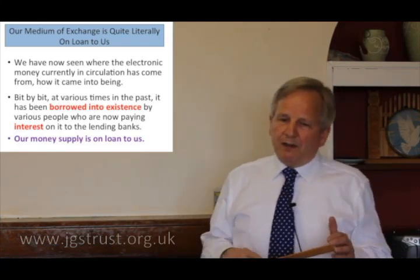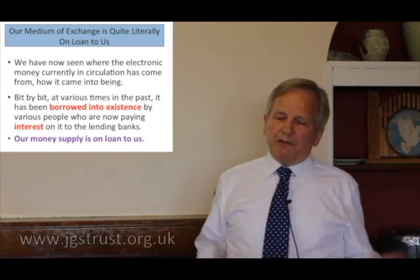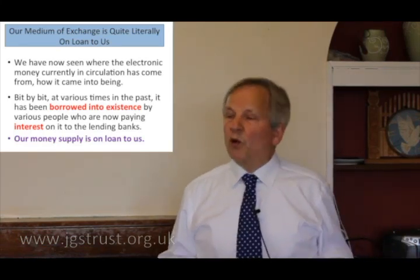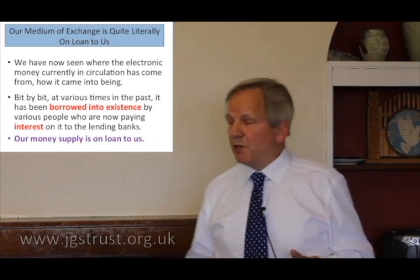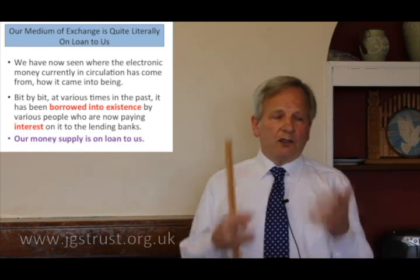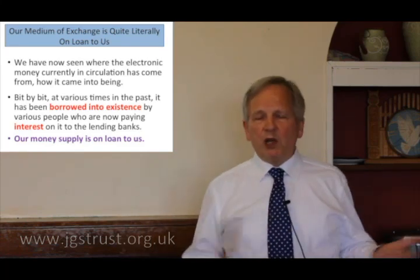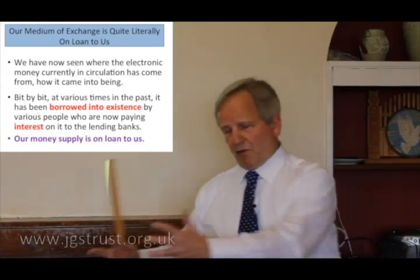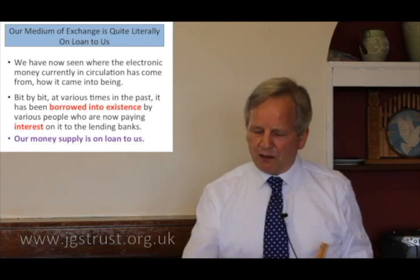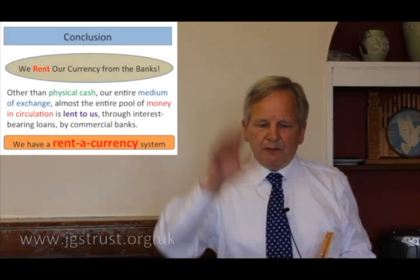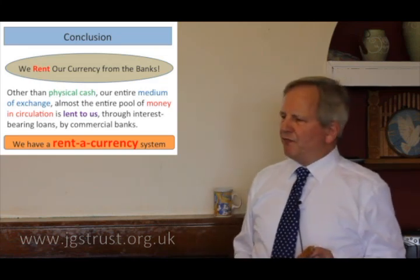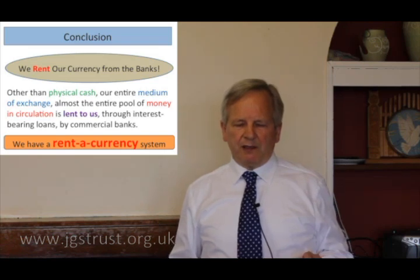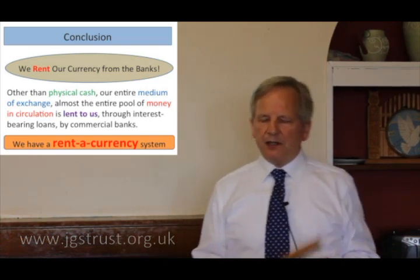That means that if you think of the whole money supply — the electronic bulk of it, which is more or less all of it these days — then that money supply, that medium of exchange, is actually on loan to us. It has no permanence; it doesn't go round and round within the community of money users. It's lent to them by this rather strange banking system. The conclusion is: we actually rent our currency, our medium of exchange, from the banking system, through these interest-bearing loans.